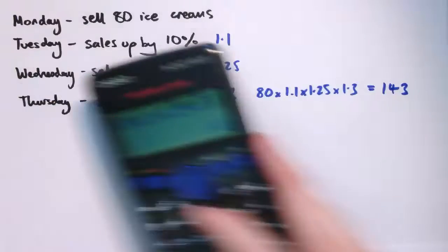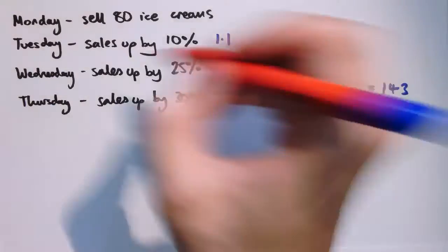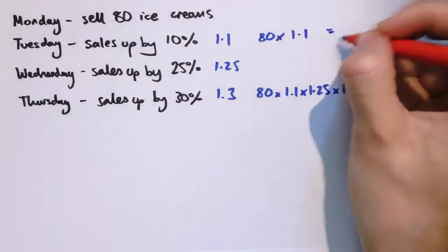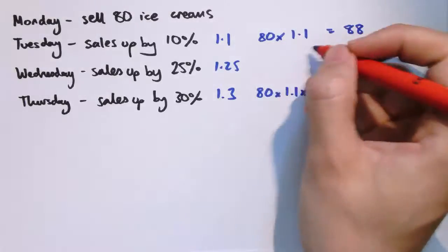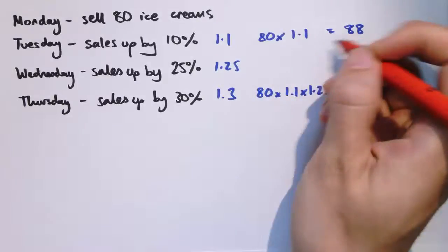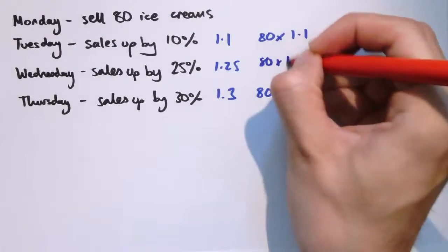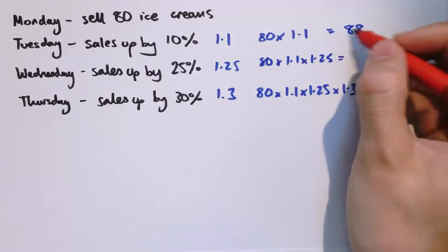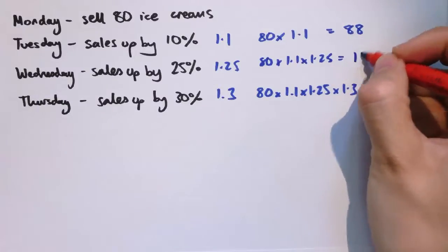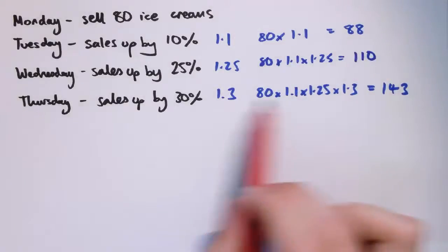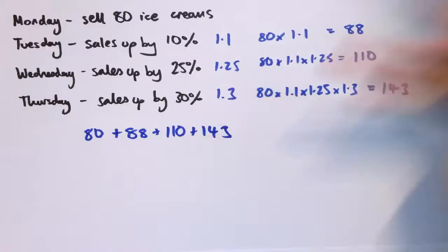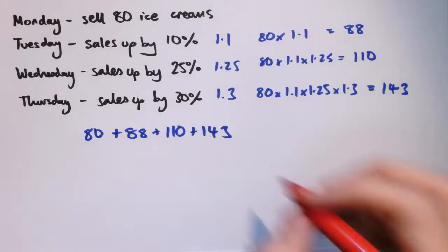If you wanted to know the total number of ice creams you've sold for the whole week, we'd have to work out how many we've sold on Tuesday and Wednesday and add them all together. So perhaps we should have done this without a calculator. 80 times 1.1 for the first day is 10% increase, that's just 88. I could either do 80 times 1.1 times 1.25, but I've already worked out 80 times 1.1, so I really just need to increase this by 25%, so a quarter of 88 is 22, so that gives 110. Then we add on the 30% of that, which is another 33, to get to 143. So the total I've sold in the whole week would be 80 plus 88 plus 110 plus 143, which is 421.